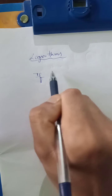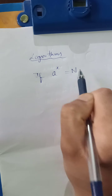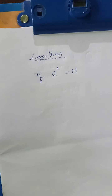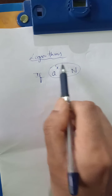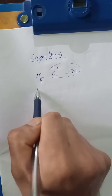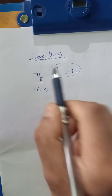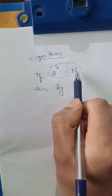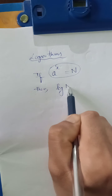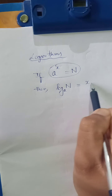Suppose a to the power x gives you n. How do I write this exponential form in terms of logarithms? If I write log of n with base a, then it gives you x.